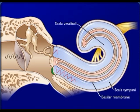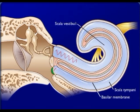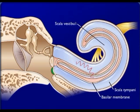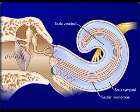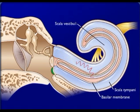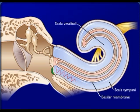Short wavelengths from high-pitched sounds cause displacement of the basilar membrane near the oval window. This movement is detected by hair cells of the spiral organ, which are not visible in the animation.